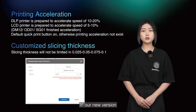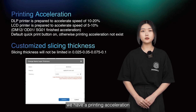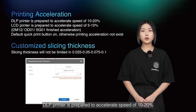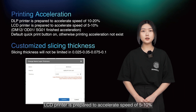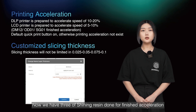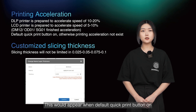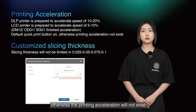In our new version we have printing acceleration. DLP printers are prepared to accelerate speed by 10% to 20%, and LCD printers by 5% to 10%. We currently have 3 Shining resins ready for the acceleration feature. This will appear when the default quick print button is on; otherwise, printing acceleration will not be active.